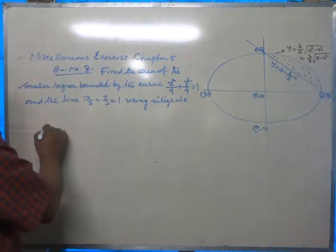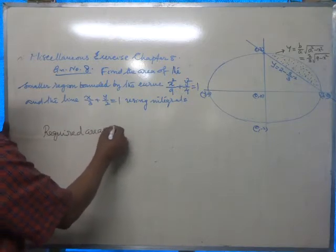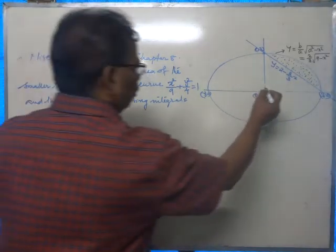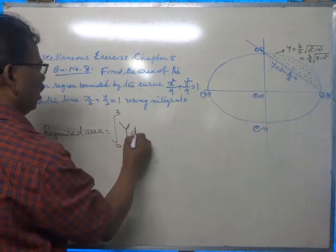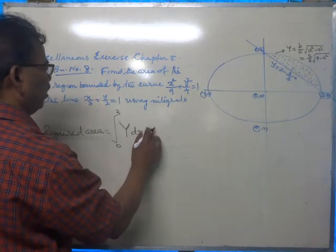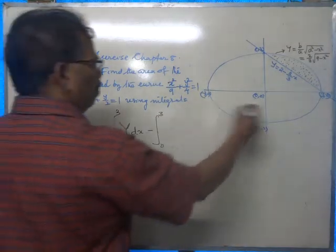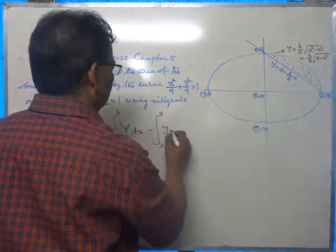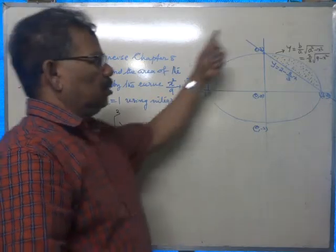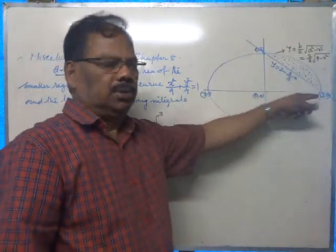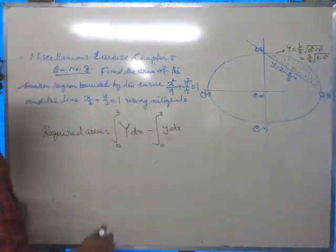The required area equals the integral from 0 to 3 of y dx, where the first y represents the ellipse curve and the second y represents the straight line.